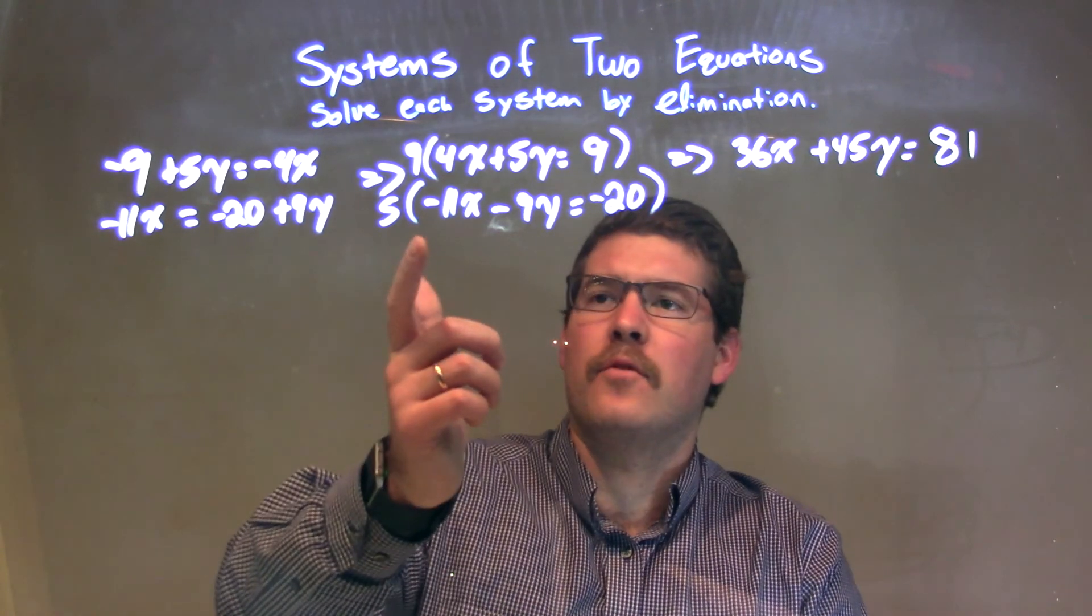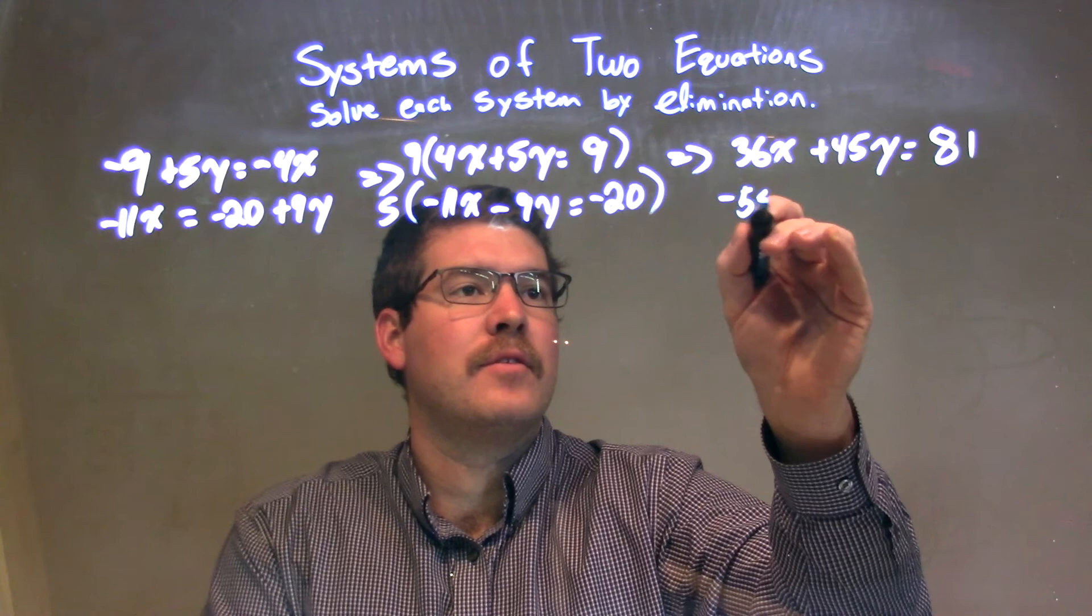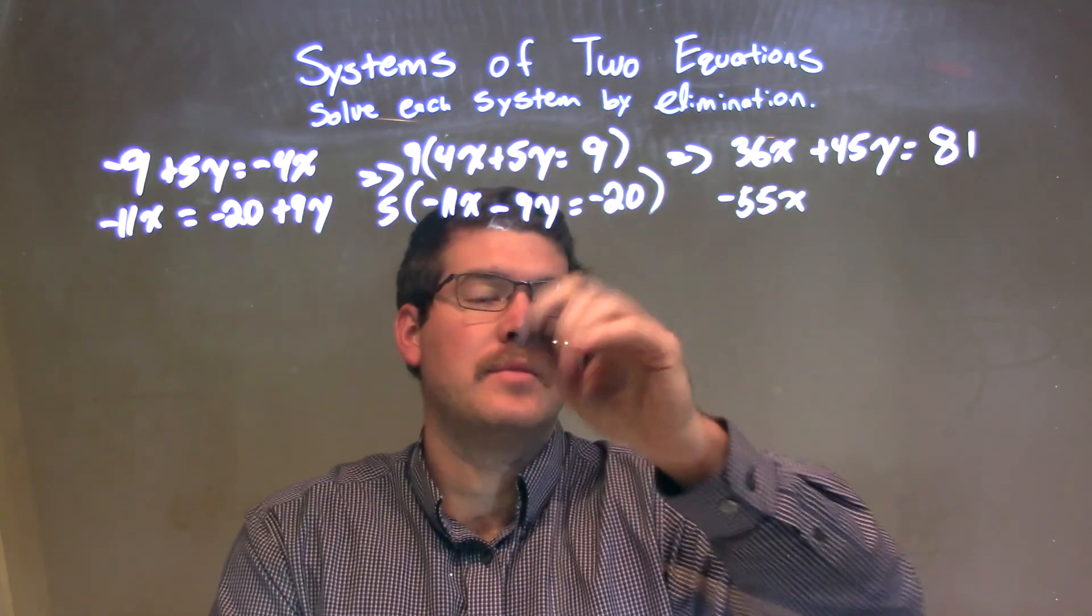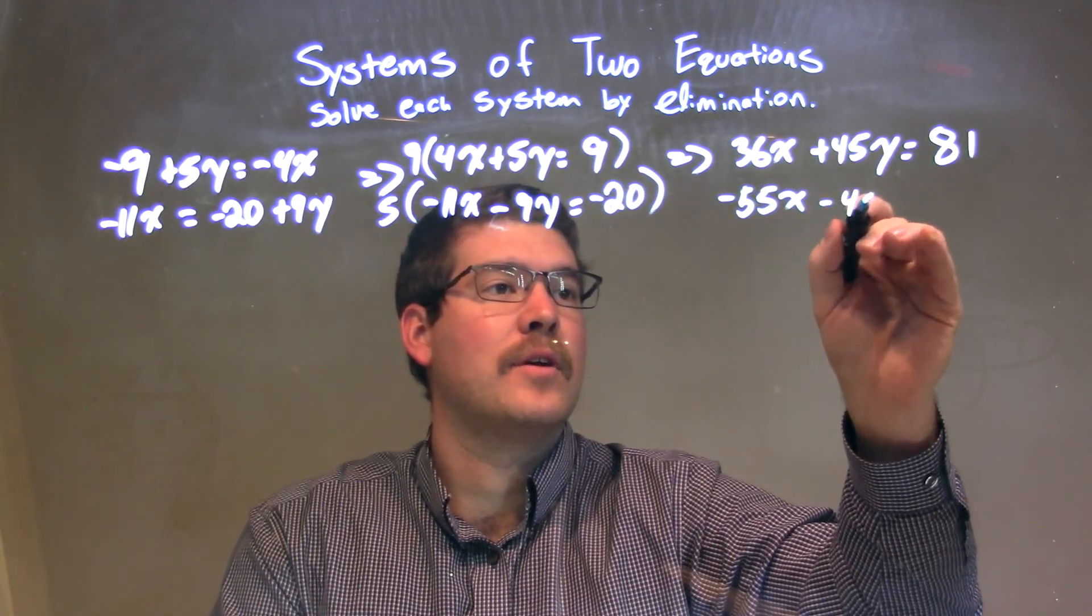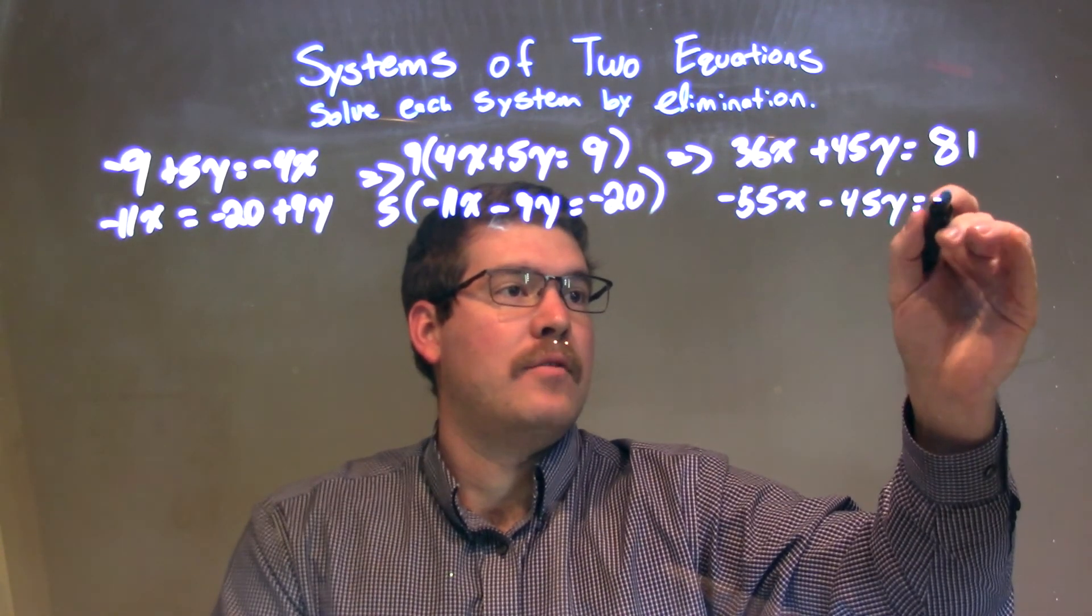Do the same thing with the 5, multiply across. 5 times negative 11 is negative 55x, and 5 times negative 9y is negative 45y. 5 times negative 20 is negative 100.